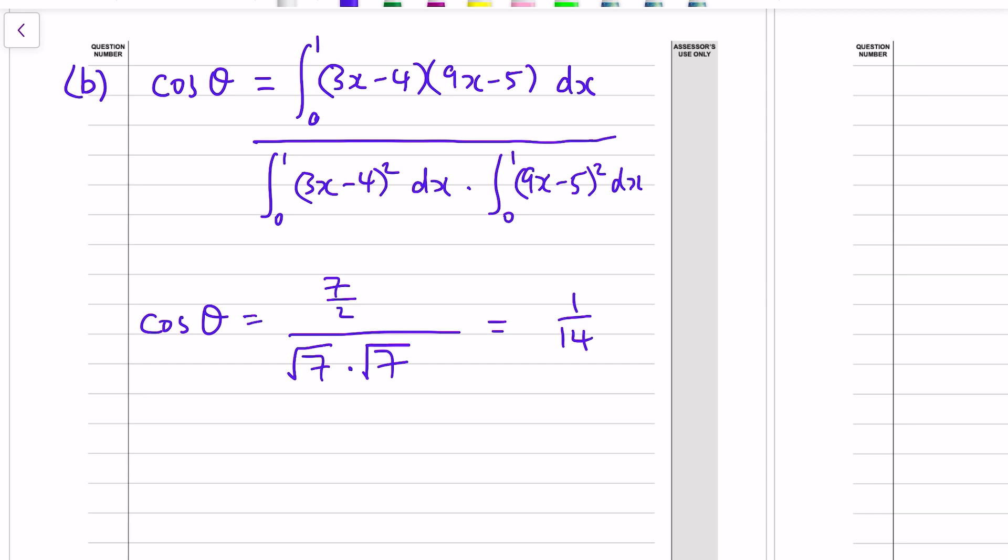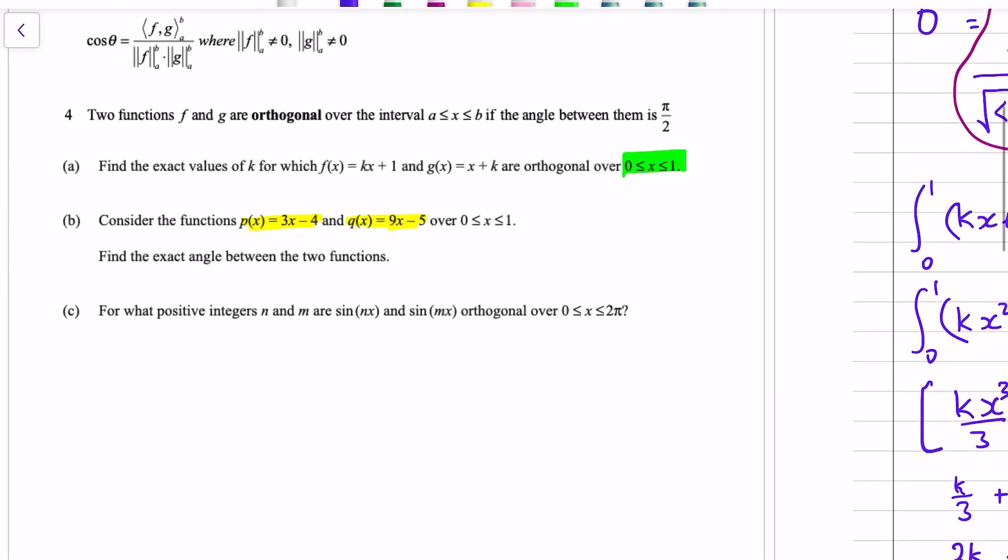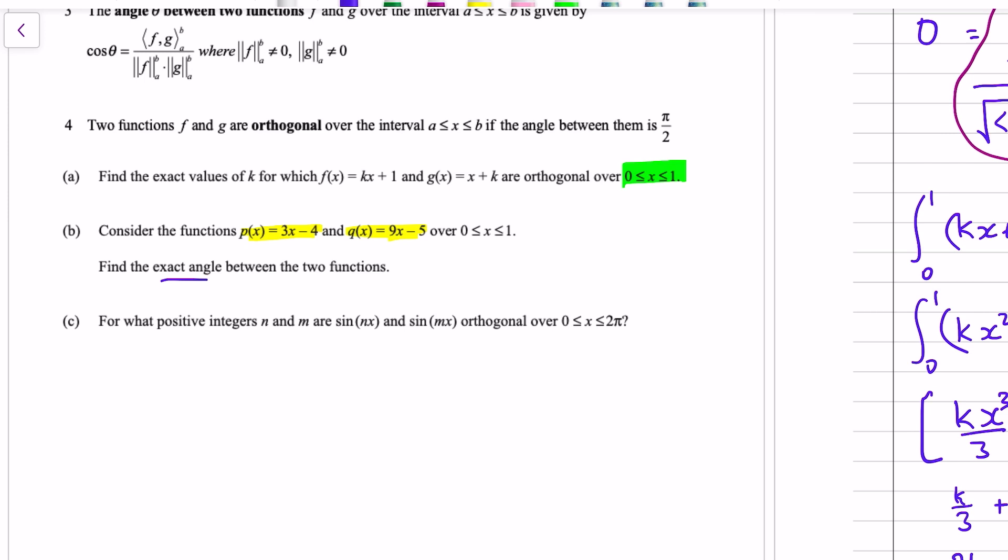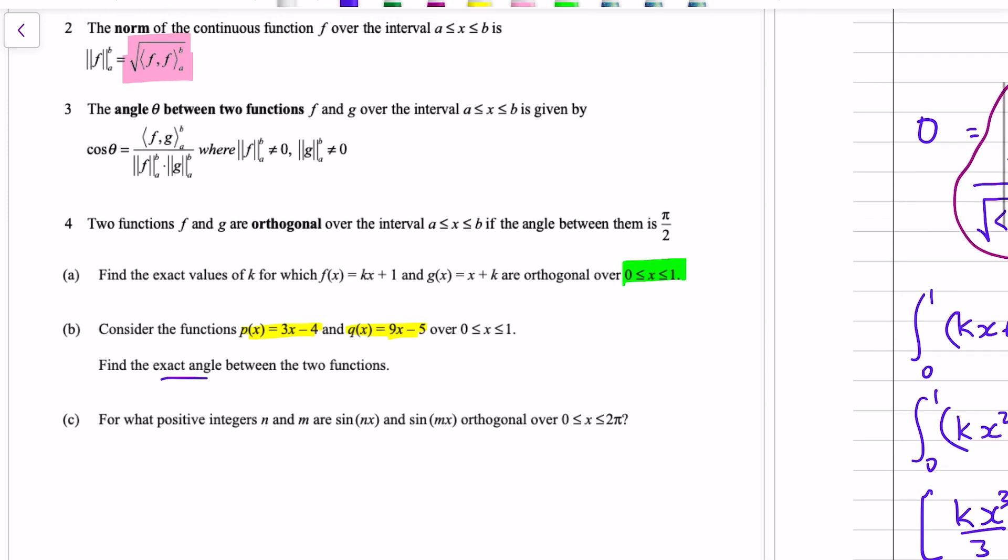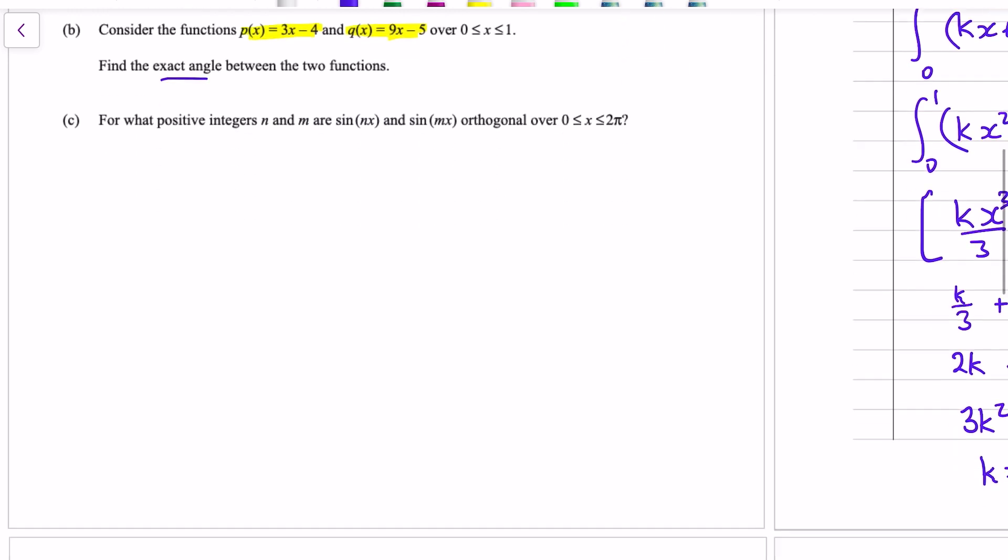Ah okay, where it says the norm, there's a square root over the inner product of the functions, which I didn't do. I was wondering, I knew I was wrong because it asks for the exact angle, and cos theta equals 1 over 14 doesn't have a nice answer. But if I put a square root over that and a square root over that, like it should be, then we've got 3.5 divided by 7 is a half. And of course we can actually solve that. Cos theta equals to a half gives us a solution of pi over 3.